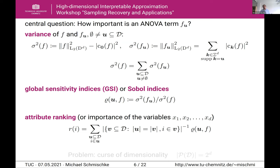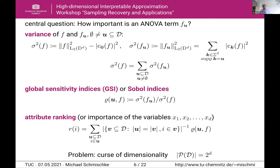We of course have the curse of dimensionality — for an increasing spatial dimension we need an exponential amount of data for standard methods. We can also find this in an ANOVA decomposition, since the number of ANOVA terms also grows exponentially in the dimension. To circumvent the curse of dimensionality, we focus on functions with low-dimensional interactions. For that, we introduce the concept of effective dimensions: one notion is the superposition dimension, which for accuracy delta is the smallest integer such that we can explain the variance of the function up to percentage delta with terms of up to order s.